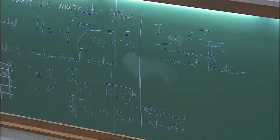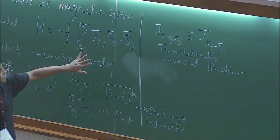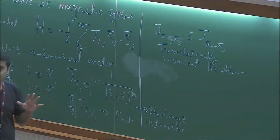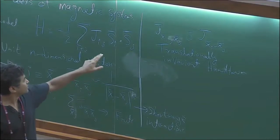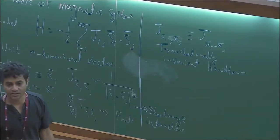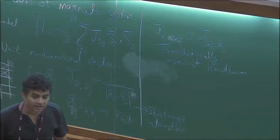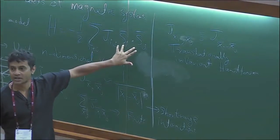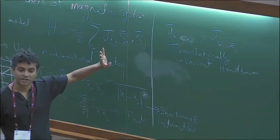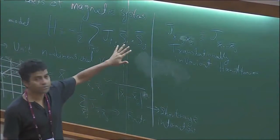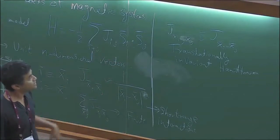The other important thing to remember is that this Hamiltonian has some symmetries. What is the symmetry? For Ising models, if you flip all the spins, the energy obviously won't change — because if you flip all spins, the sign of the product doesn't change. But if you have Heisenberg spins, there's rotational symmetry: if you rotate all spins by the same amount, the dot product doesn't change.